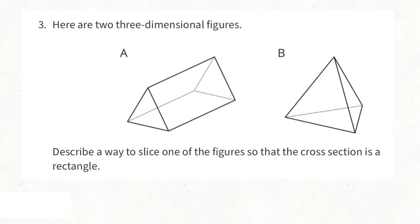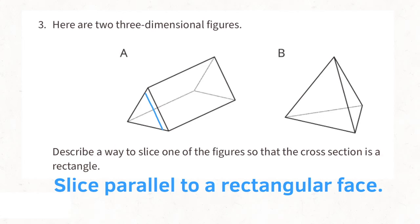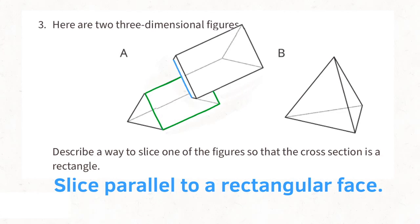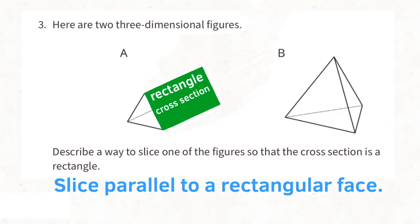Problem number 3. Here are two three-dimensional figures. Describe a way to slice one of the figures so that the cross section is a rectangle. Slice parallel to a rectangular face, and you can see that the cross section is in the shape of a rectangle.